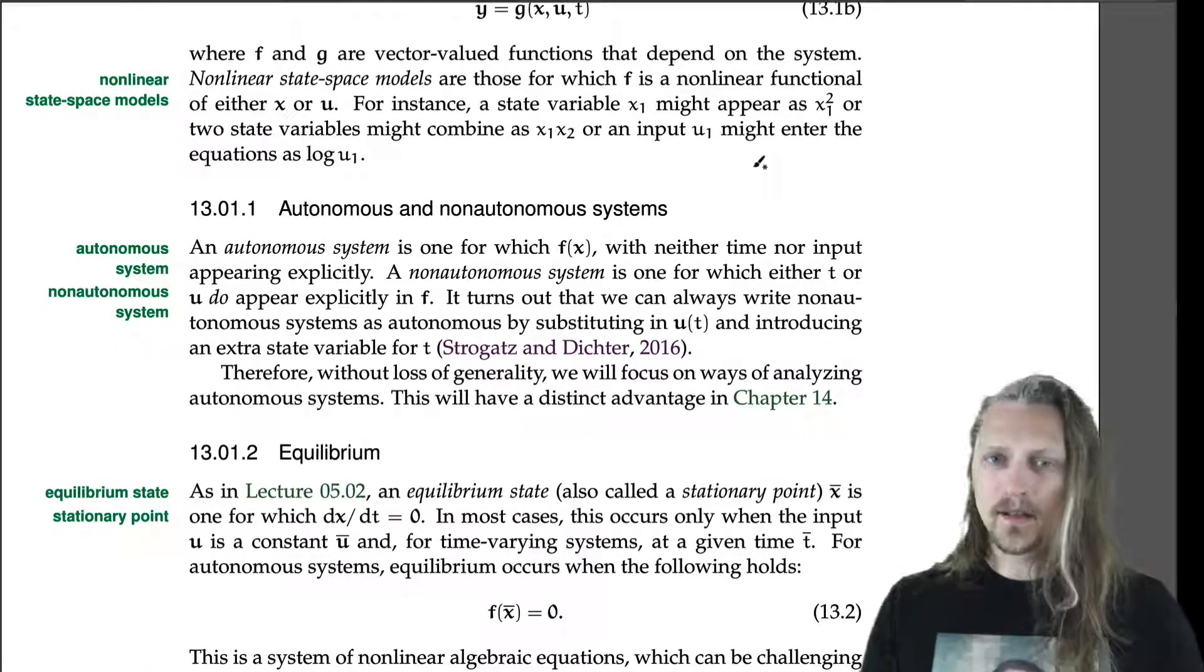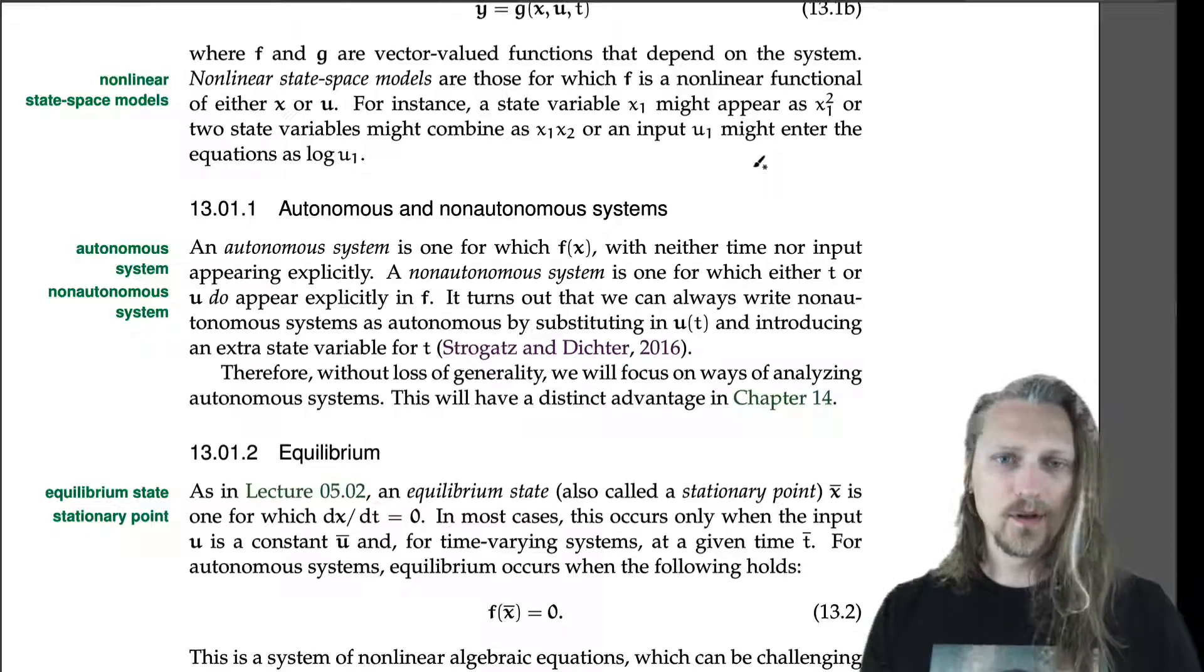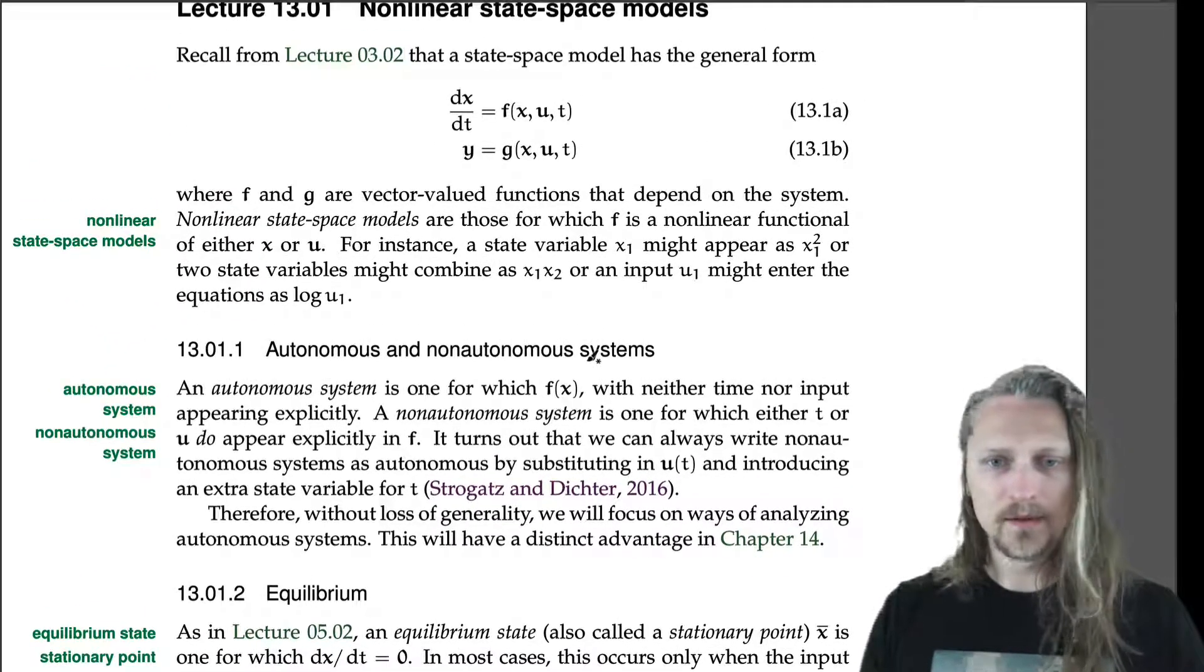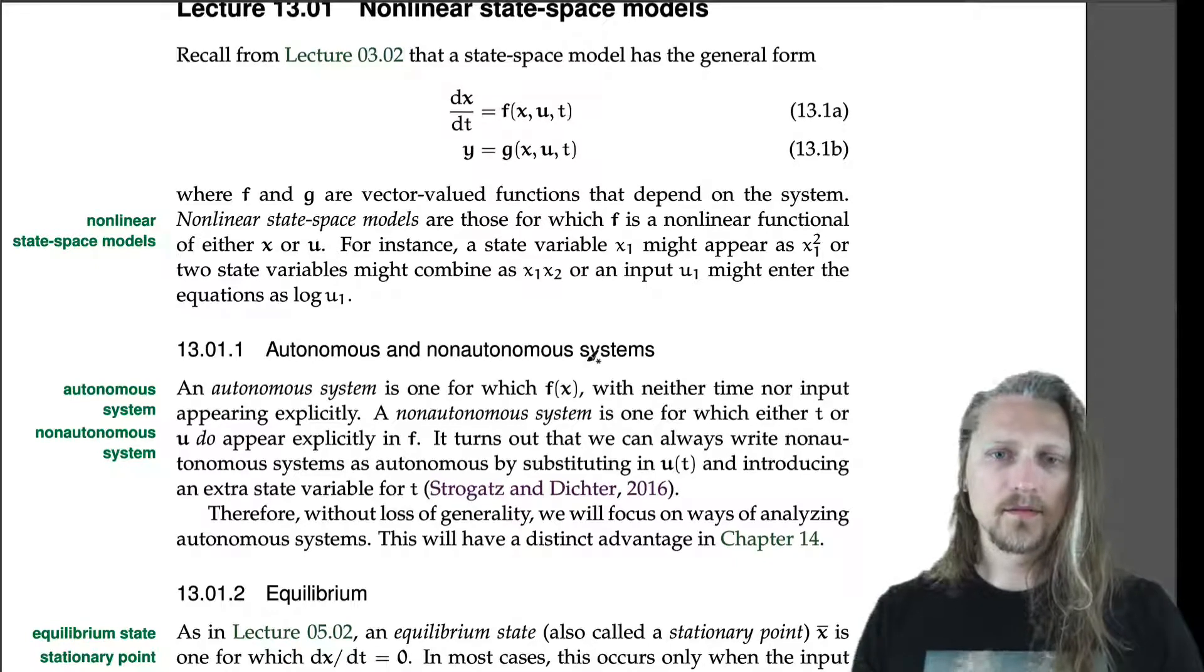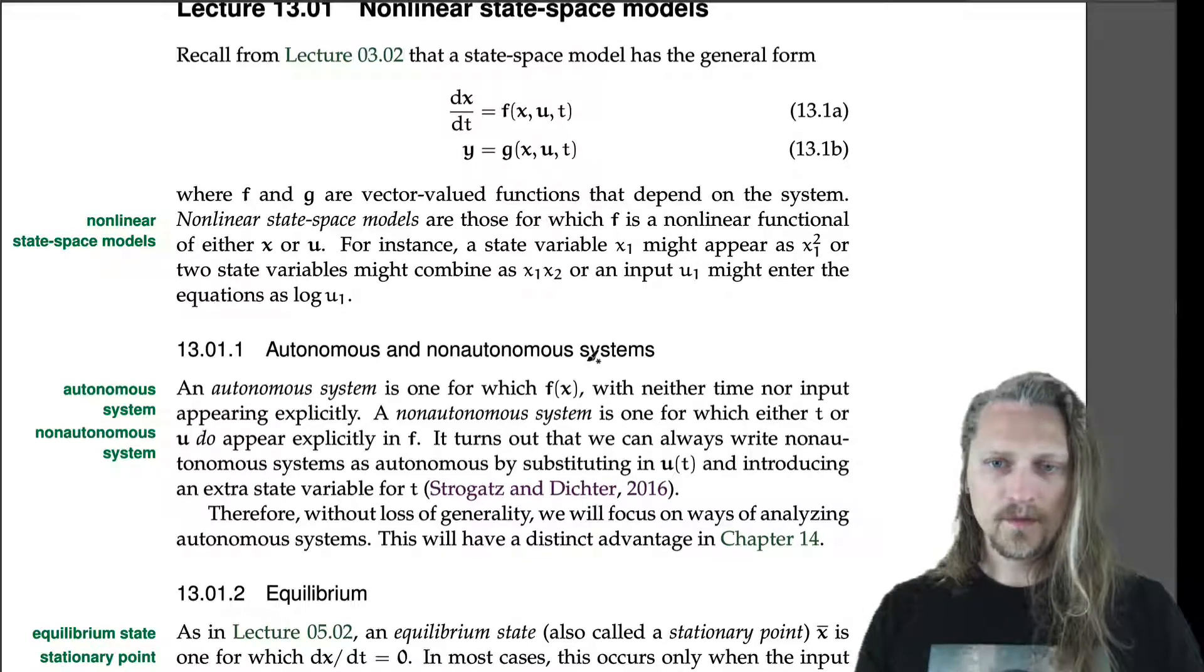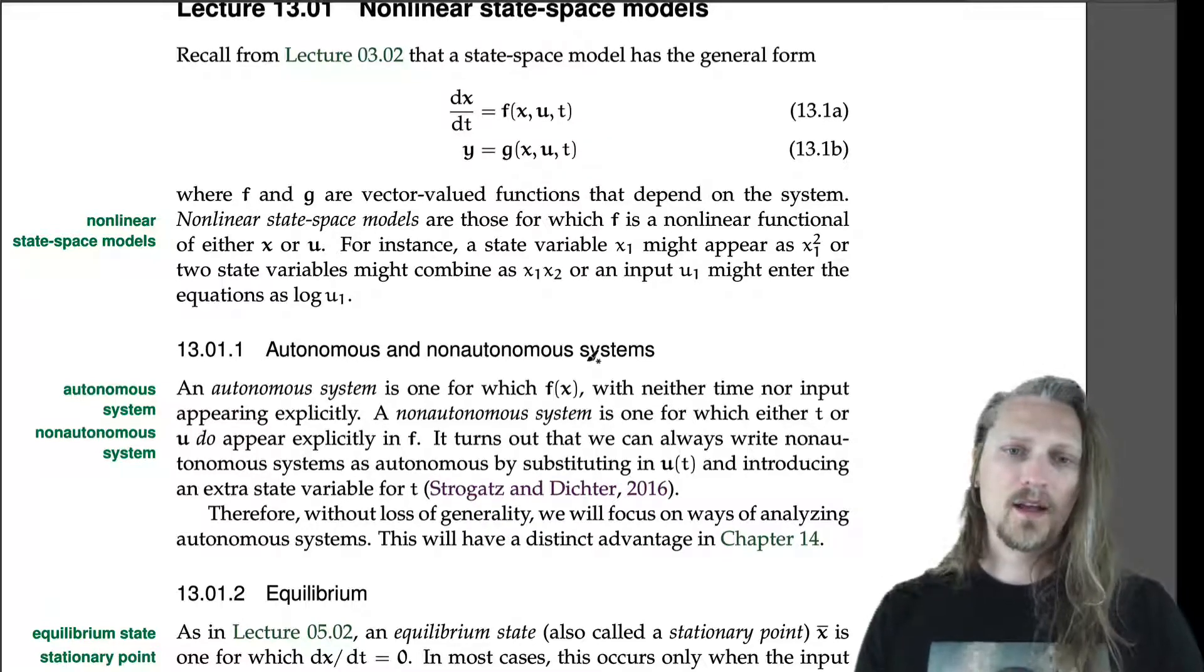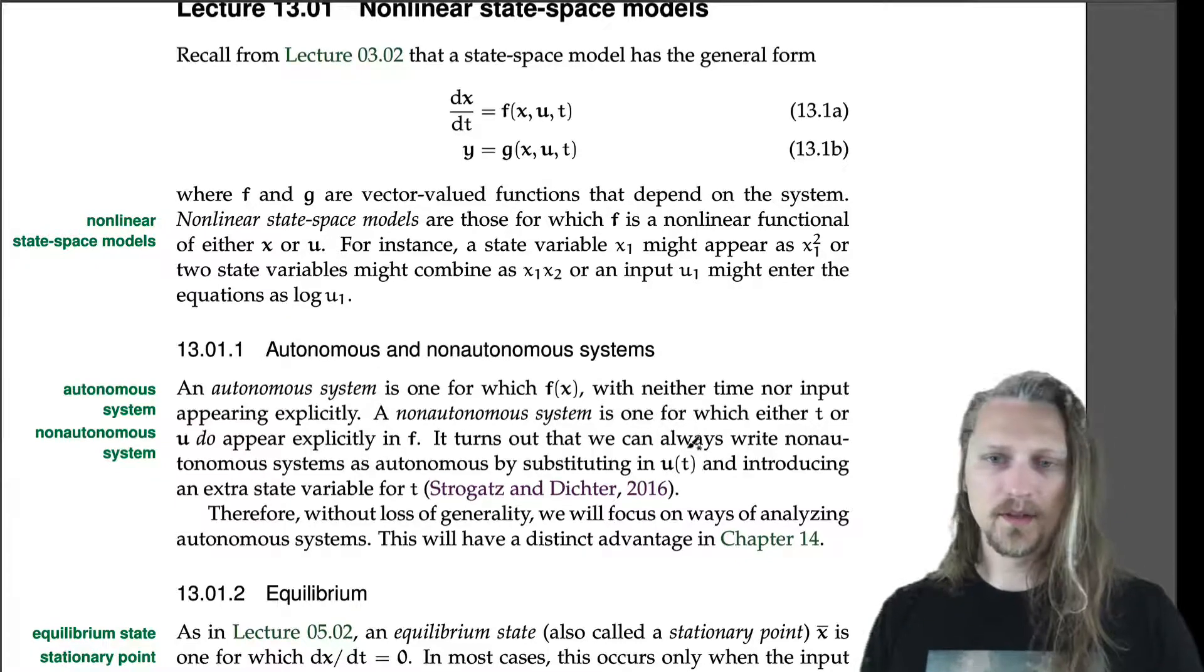Autonomous and non-autonomous systems. An autonomous system is one for which f of x with neither time nor input appearing explicitly, so f is a function of x, meaning that the state equation is a function of only the states and not of the input explicitly or time explicitly. A non-autonomous system is one for which either time or input do appear explicitly in f. It turns out that we can always write non-autonomous systems as autonomous by substituting in u of t, so substituting in u wherever it appears in the equation.